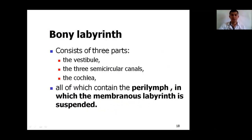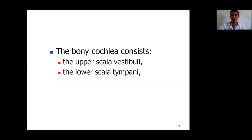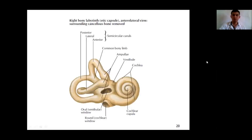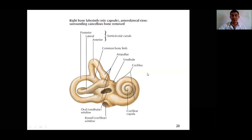The bony labyrinth consists of the vestibule, three semicircular canals, and the cochlea, all of which contain perilymph in which the membranous labyrinth is suspended. The membranous labyrinth contains endolymph. The bony cochlea is a snail-shaped structure that makes two and a half turns and consists of the upper scala vestibuli — which opens by the oval window (fenestra vestibuli) — and the lower scala tympani, which opens by the round window. The vestibule consists of the saccule and utricle.